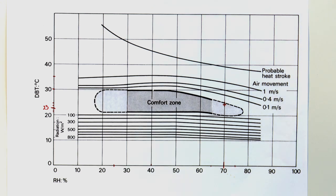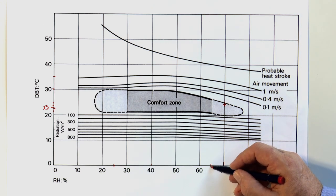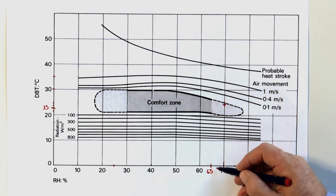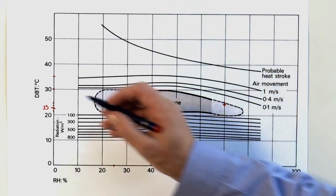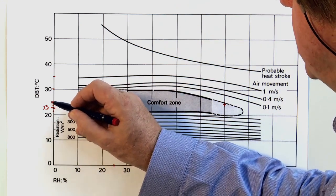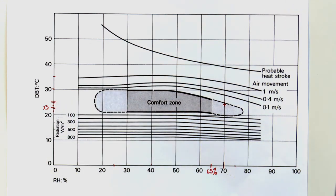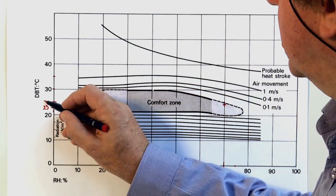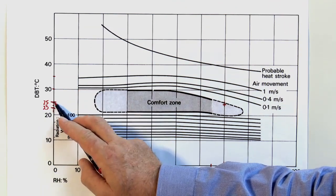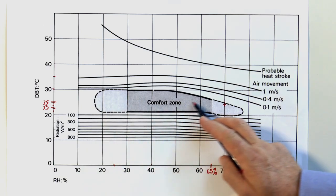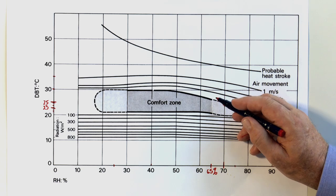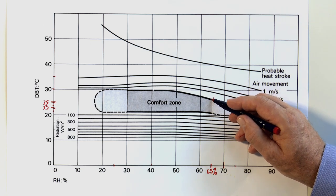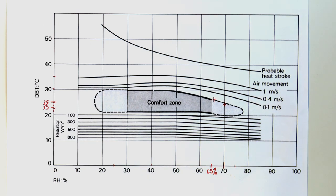The next example that we looked at was 65% relative humidity and we looked at 25% dry bulb temperature. So the 25% plots here. We then plot across intersecting with the 65% and again we're right on the border of the comfort zone.